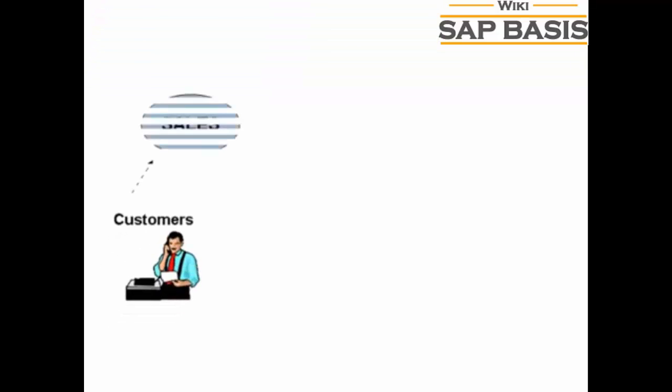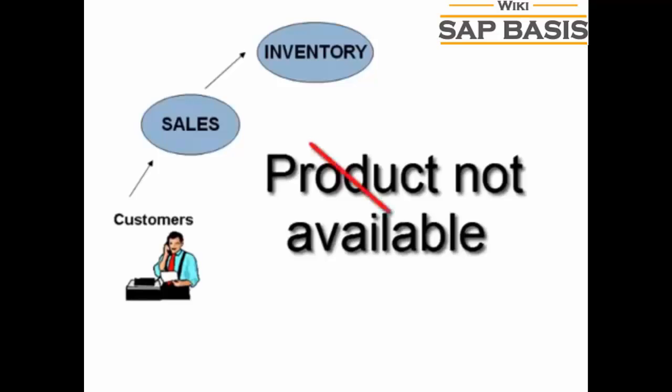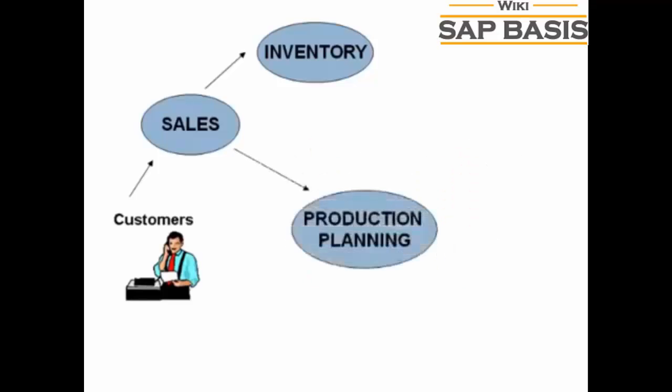A client approaches the sales team to buy a particular product. The sales team approaches the inventory department to check the availability of the product. In this case, the product is out of stock, so the sales team approaches the production planning department to manufacture the product.